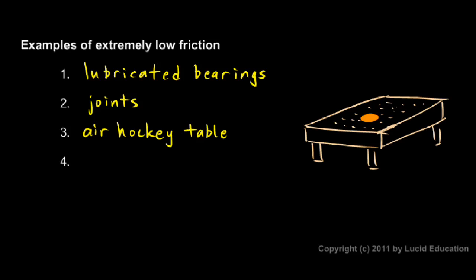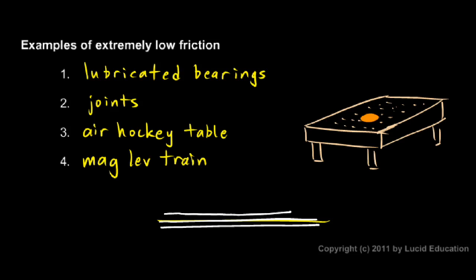And another example is what we call sometimes a maglev train, which is actually similar in some ways. By maglev, we mean magnetic levitation. And this is a train with no wheels. They have one of these in Japan. On the tracks, the train that... well, the tracks are solid. Let me draw them. And then the train sits up here above the tracks.